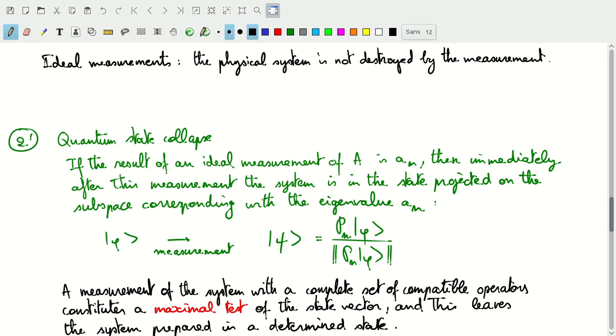We can of course use another thing that we've talked about before, that's our complete set of compatible operators. If we make one of these ideal measurements of the system with a complete set of compatible operators, then if there's more than one operator in that complete set, we will have to make ideal measurements because we don't want to destroy the system with our first measurement.